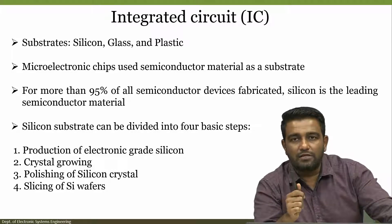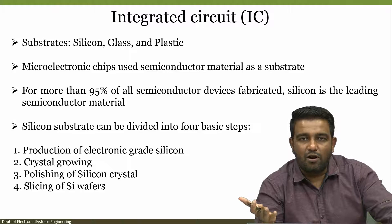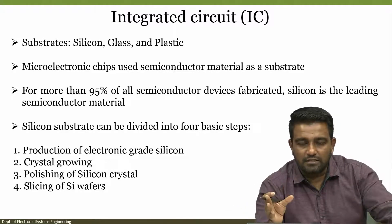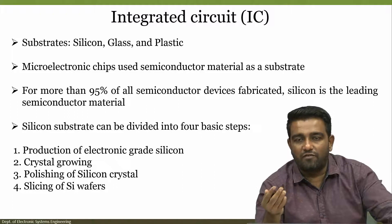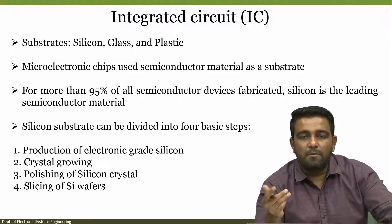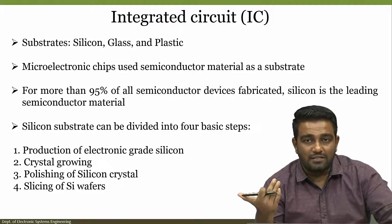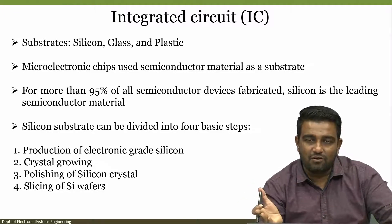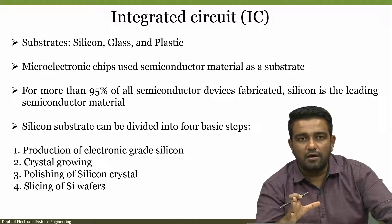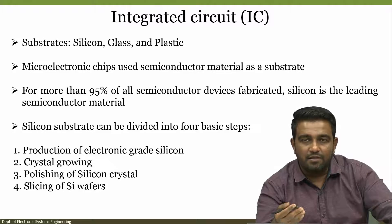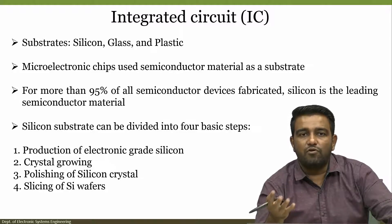When you talk about clean rooms, half of everything in electronics today is IC-based. Integrated circuits are made up of silicon as the base material. We also have SOI wafers, gallium nitride wafers and many more, but the base still remains silicon — 90 percent of the industry still uses silicon as the substrate. If we want to make different devices, you can also use glass or plastic as a substrate. To produce a silicon substrate there are four basic steps: production of electronic-grade silicon, crystal growing, polishing of wafers, and slicing of silicon wafers.